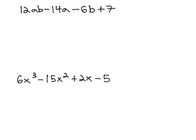First, we're going to look at 12ab minus 14a minus 6b plus 7. As usual, we split down the middle right after the second term. On the left side now, we look for the GCF.